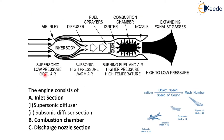The construction of the Ramjet engine consists of an inlet section, a combustion chamber, and a discharge nozzle section. The inlet section consists of two diffusers: first the supersonic diffuser, then the subsonic diffuser section. This one is the supersonic diffuser section, this one is the subsonic diffuser section, this one is the combustion chamber, and this one is the discharge nozzle section.